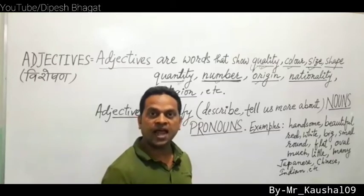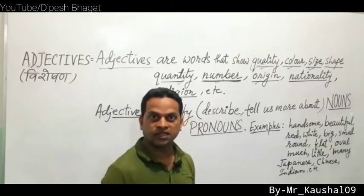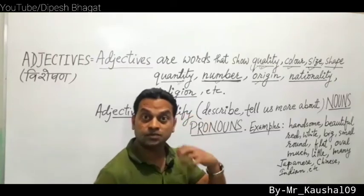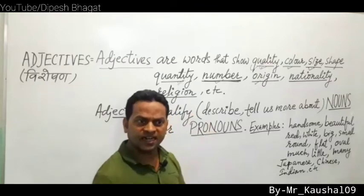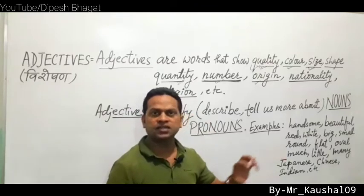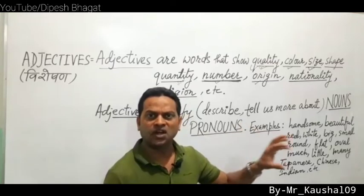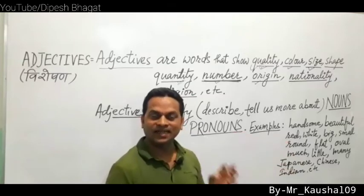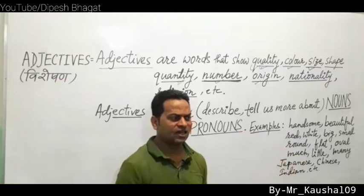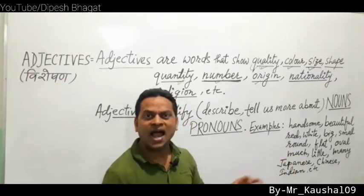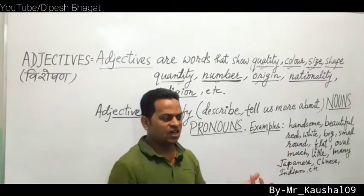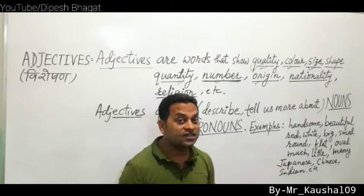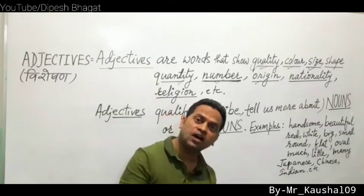More examples of positive quality adjectives: 'He is very active' — active is positive quality. 'He is intelligent' — intelligent is a positive quality adjective. For negative quality: 'He is very boring, very irritating, very lazy, very bad, very naughty, very cruel.' Words like lazy, irritating, boring, cruel, naughty, bad are all adjectives showing negative quality.